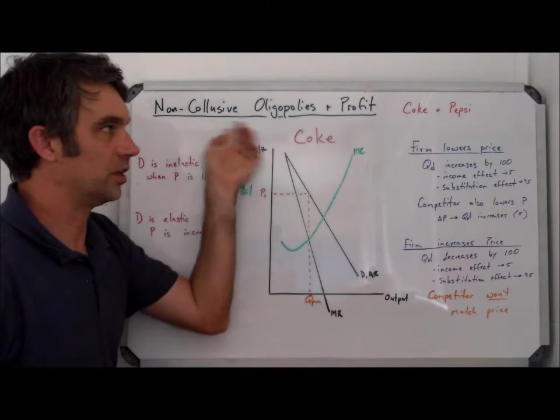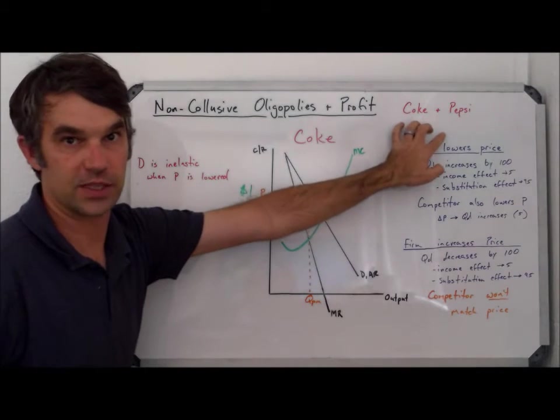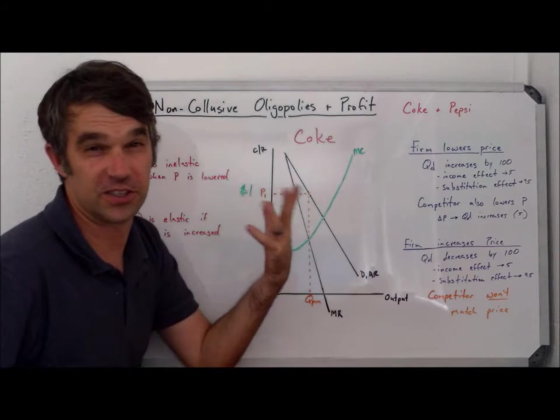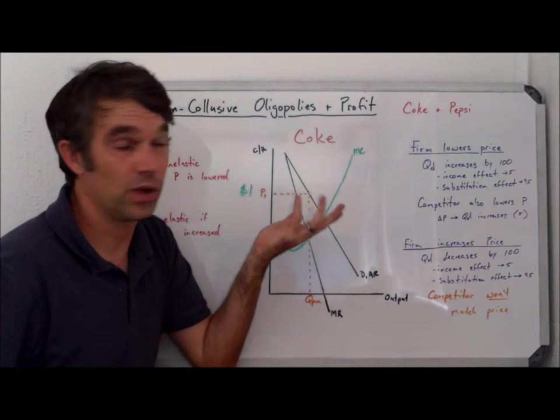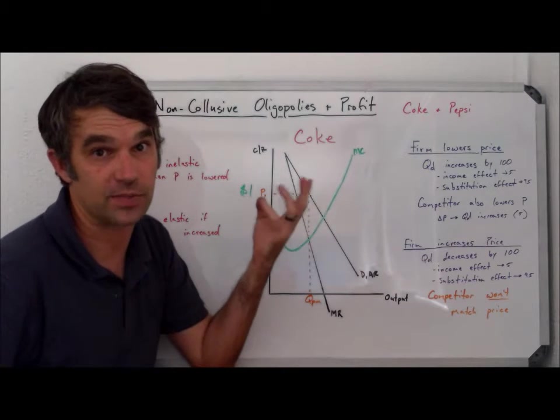When we look at oligopolies that are not colluding with each other, like Coke and Pepsi, you get a very different understanding of how profit maximization works and what can happen in terms of their price making power.